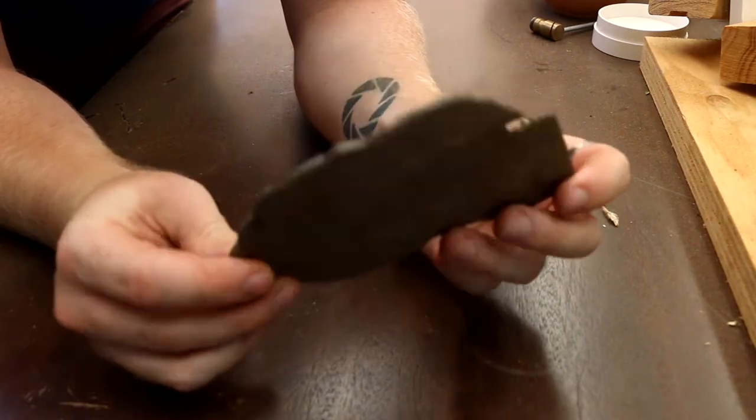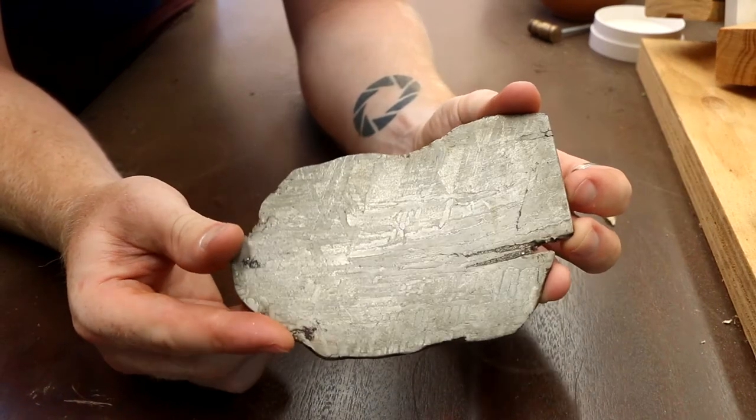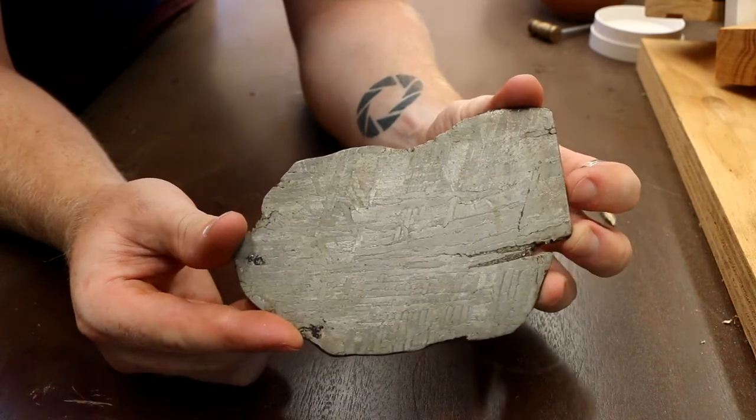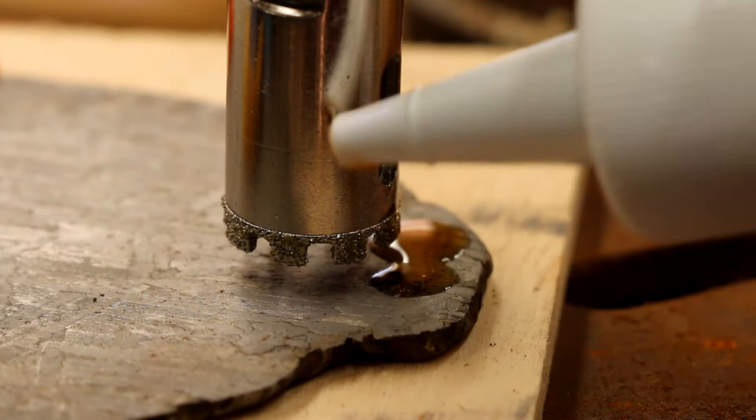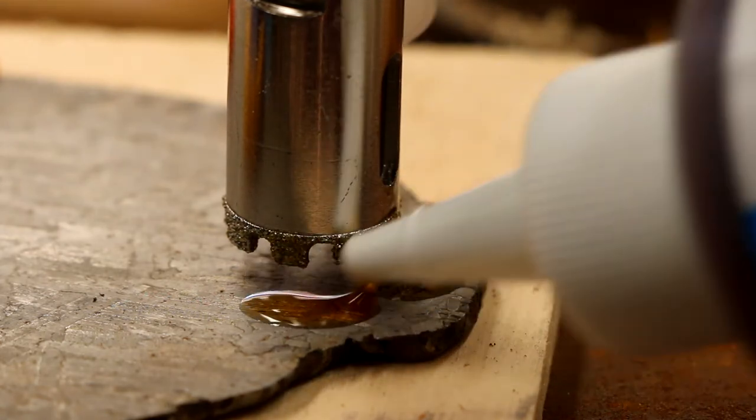So you can see we started off with this nice chunk of meteorite. It's from the Seymchan meteorite fall in 1967 in Russia. It's a pallasite meteorite and it's got some really nice patterns in it that I'm hoping will show up in the final ring.